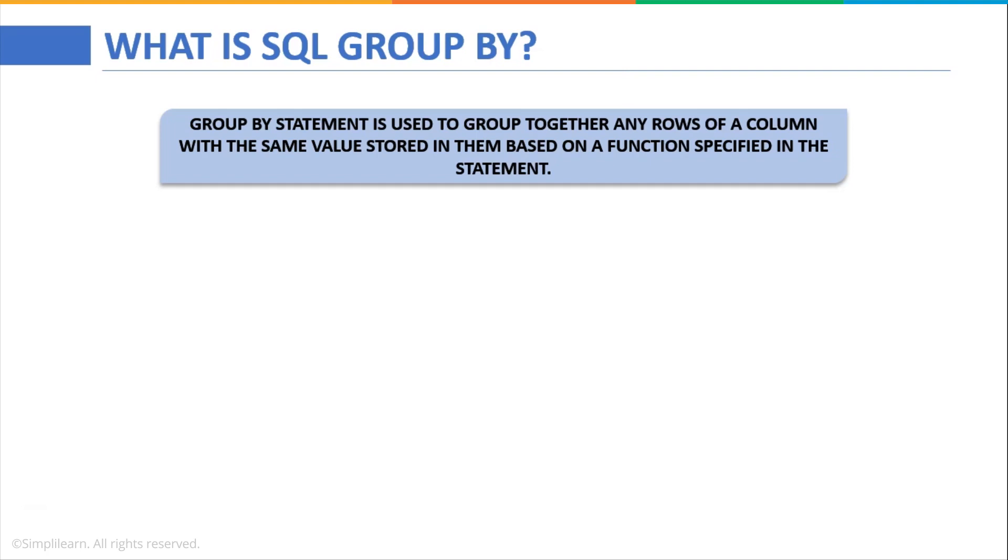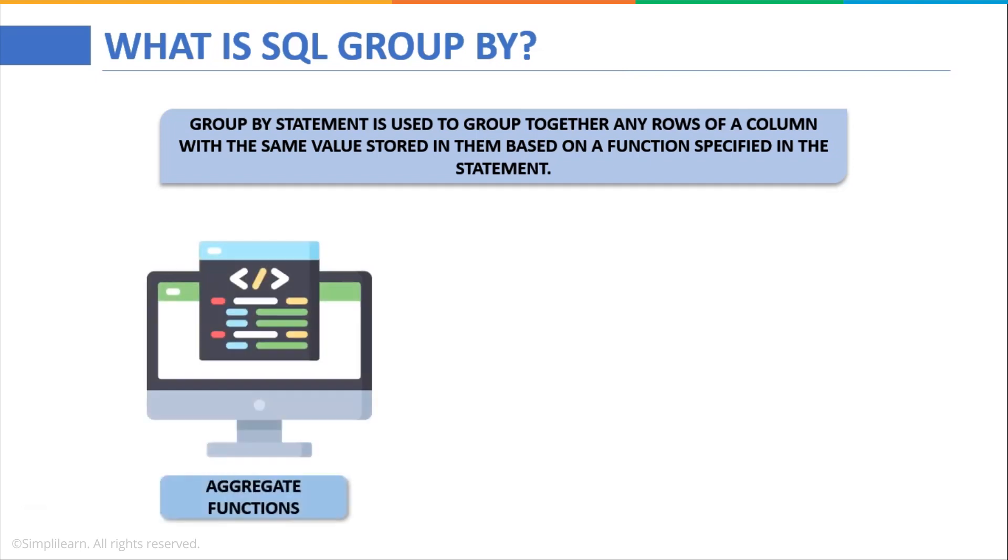Now GROUP BY in SQL helps us club together all these identical rows present in the columns of a data. GROUP BY statement is used to group together any rows of a column with the same value stored in them based on a function specified in this statement. Basically, GROUP BY clause is used to group the rows which have matching values using the specified condition.